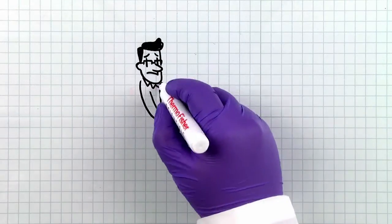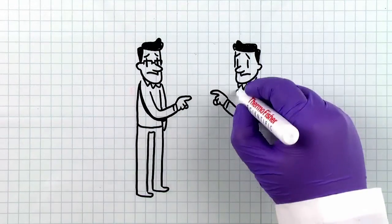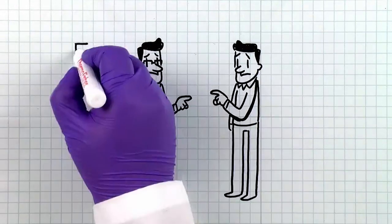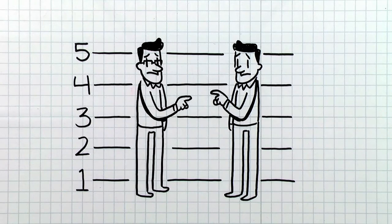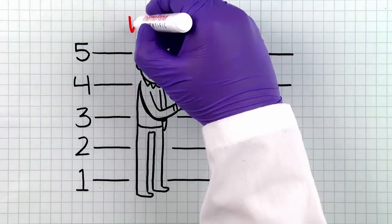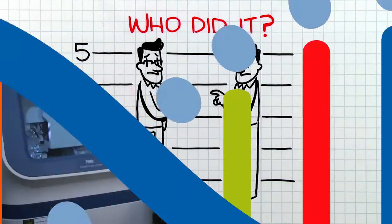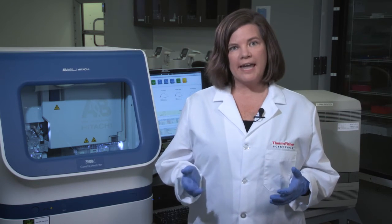Consider a case in which two brothers have been identified as suspects, and each has accused the other of the crime. It's important in this scenario to differentiate between the two related males to identify the true perpetrator. This is when the rapidly mutating YSTRs shine. Because of the higher mutation rate and therefore better discrimination capacity, brother pairs, and in other cases father-son pairs, can be distinguished.